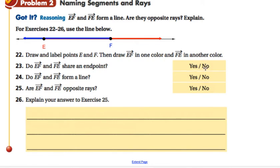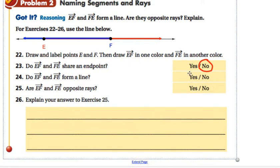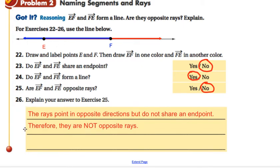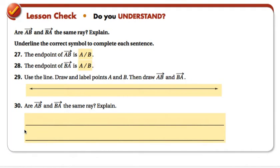Do EF and FE share an endpoint? Well, no, they don't share an endpoint. They go in opposite directions, so they have opposite endpoints. Do EF and FE form a line? Yes, they do. If you take all of those points together, they would form a line. Are EF and FE opposite rays? Well, technically, no, they are not opposite rays. The reason they are not opposite rays is they do not share an endpoint. Even though they go opposite directions, they do not share an endpoint, so they can't be opposite rays.